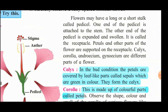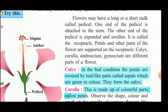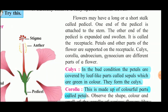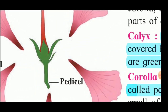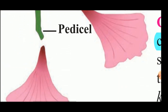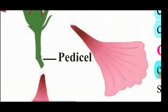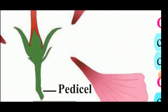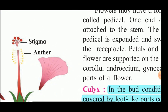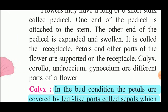On the pedicel, one end is attached to the stem and the other end is expanded and swollen, and it is called the receptacle. Here this end of the pedicel is attached to the stem, and the other swollen end is where the flower is attached. That swollen part is called the receptacle.